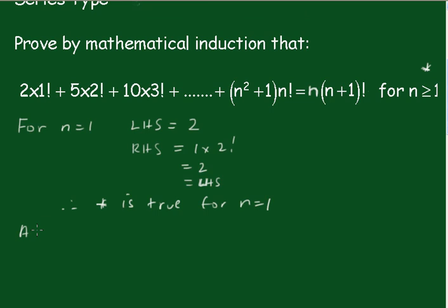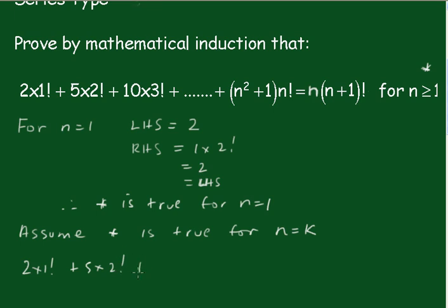Assume the statement is true for n equals k, that is: 2·1! + 5·2! + ... + (k²+1)·k! = k·(k+1)!. We'll call that our assumption statement.